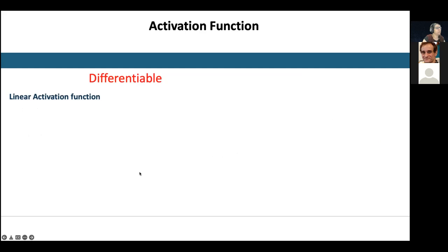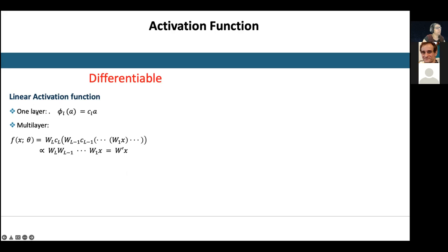There are various options for activation functions that are differentiable. The first is the linear activation function. For a single layer it is simply a constant C_L multiplied by the activity A. For multiple layers, the weights keep multiplying, and eventually it remains a different constant multiplied by the input — it stays linear. So if all layers have linear activation functions, we cannot solve nonlinear problems.